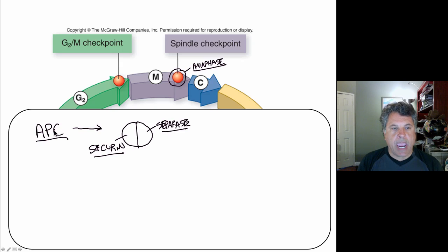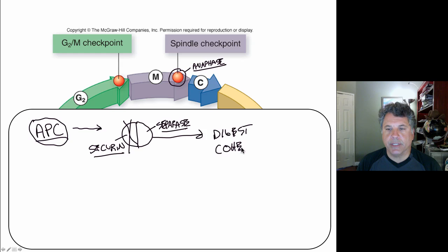When the APC is activated by the correct alignment of chromosomes at the metaphase plate, and the attachment of each chromatid to a kinetochore microtubule with equal tension, then securin is released from separase. And separase then can go and digest, proteolytically cleave in other words, it can digest the cohesin proteins that are securing the sister chromatids.